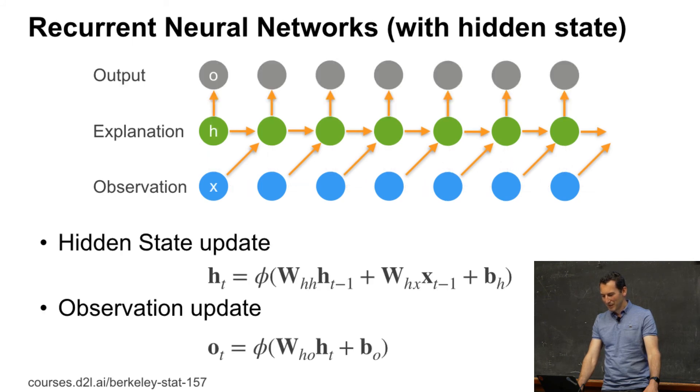So recurrent models with hidden state. In the simplest case, you could have something like this. I have a hidden state HT which is just given by some function phi of matrix vector W times H plus matrix vector for W times the past observations and some bias.